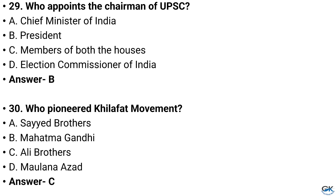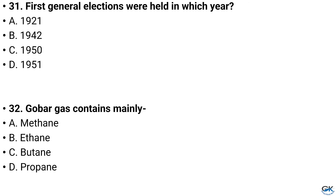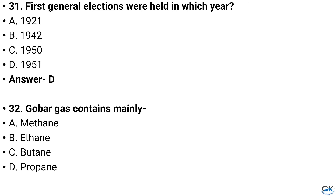Question number 31. First General Elections were held in which year? Option A: 1921, Option B: 1942, Option C: 1950, Option D: 1951. And the answer is Option D: 1951.